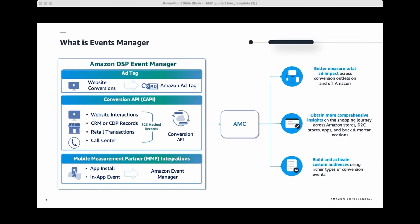The focus of this session will be on utilizing Events Manager signals within AMC. The Events Manager feature on Amazon DSP provides advertisers the ability to import conversion events from sources outside of Amazon, such as websites, offline channels, and mobile apps. These imported events can then be leveraged for attribution, optimization, reporting, and audience creation.